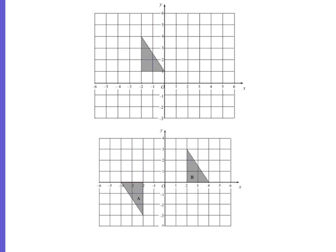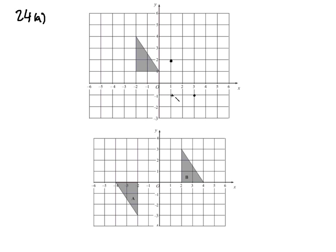Question 24: translate the shape by the vector (2, -3). Think of it as a coordinate — 3 across and 2 down. Take each point and go 3 across and 2 down, plot the new points, then join them up with straight lines to get the translated shape.